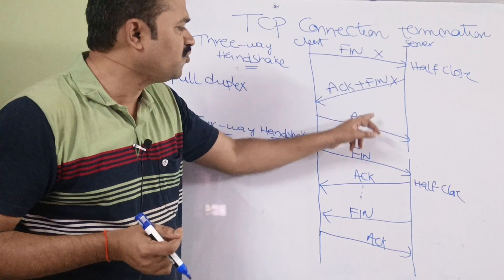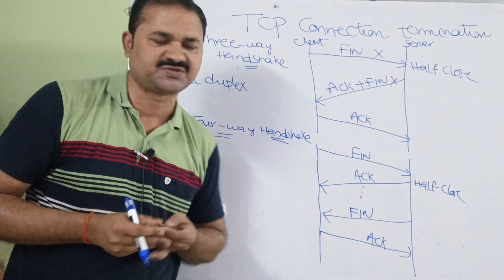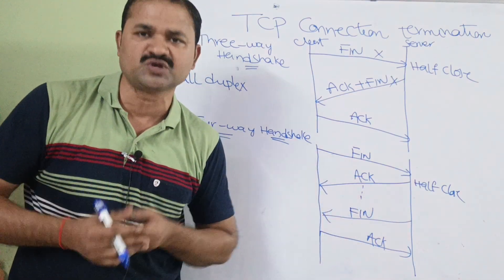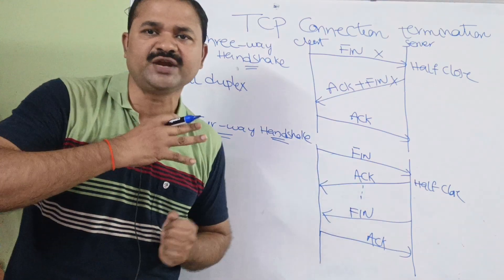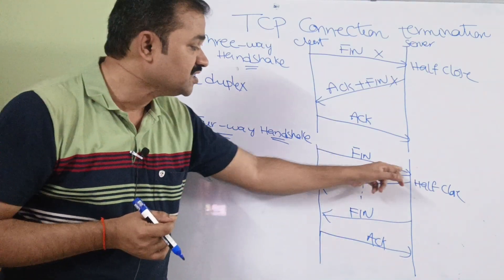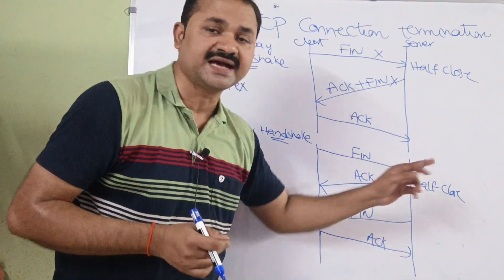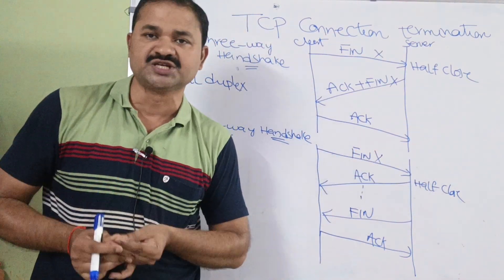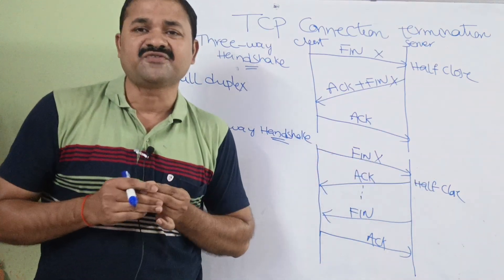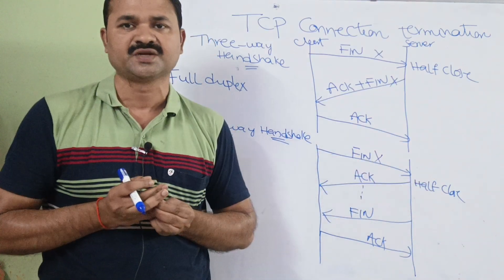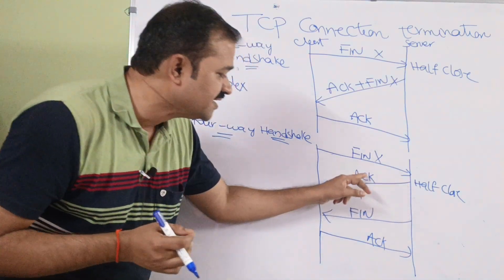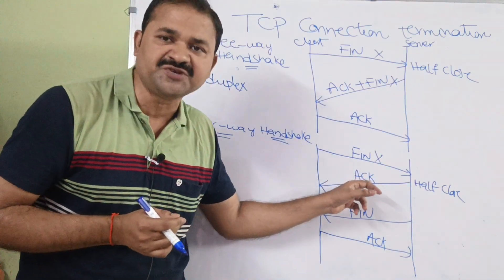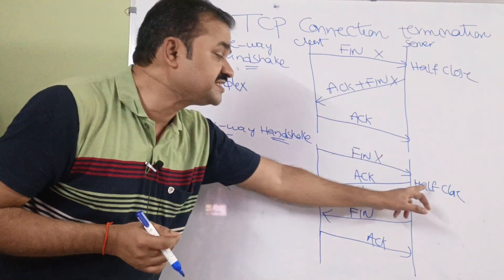Now let us see the four-way handshake. In the three-way handshake we have three segments, whereas in the four-way handshake we have four segments. First, the client has no data to send, so the client sends a FIN segment to the server — this is the half close, meaning the connection from client to server is closed. Next, the server sends an acknowledgement to the client, confirming it has received the FIN segment from the client.